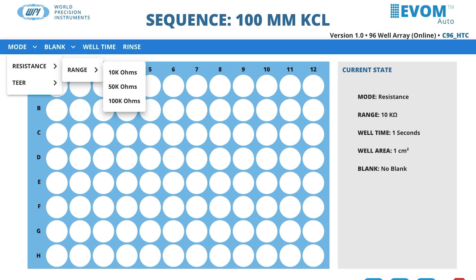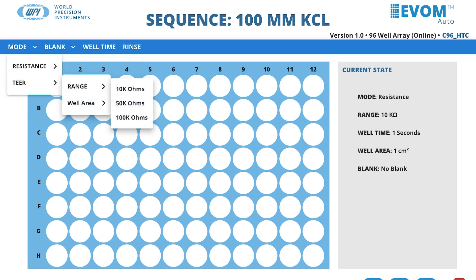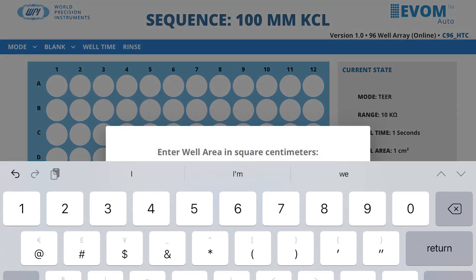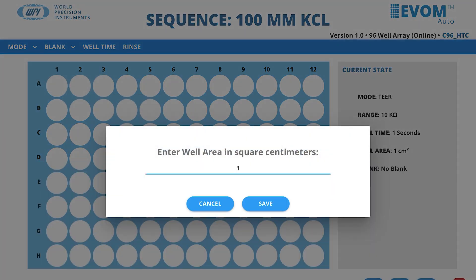When you select Mode Tier, you may choose the resistance range and the well area. The well area defines the surface area of a well on your plate.